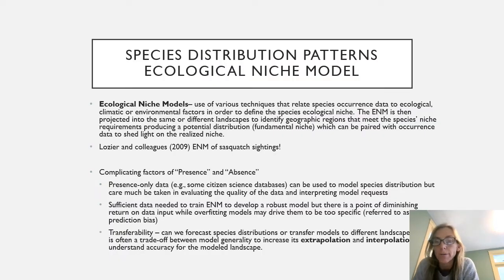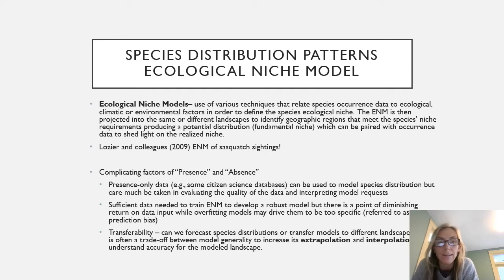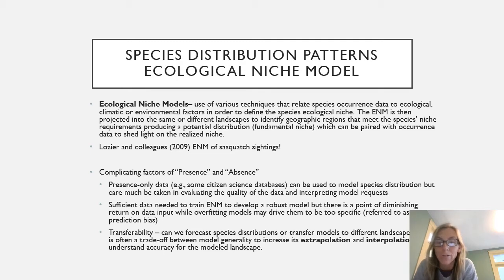Another species distribution modeling technique is the ecological niche model. It uses various techniques relating species occurrence to ecological, climatic, or environmental factors to define the species' ecological niche. Once built, an ecological niche model can be projected into the same or different landscapes to identify areas that meet that species' needs — essentially shedding light on the fundamental niche, which can then be paired with current data to reveal the realized niche.